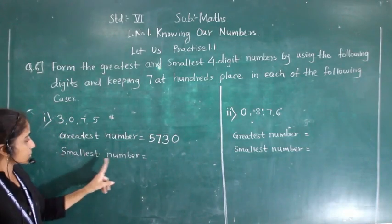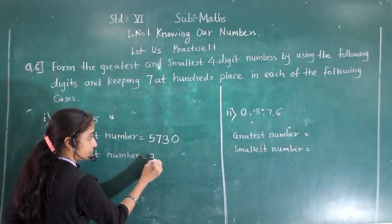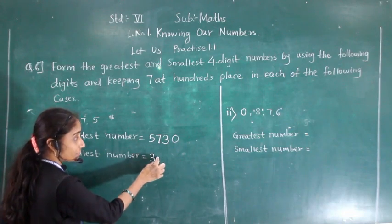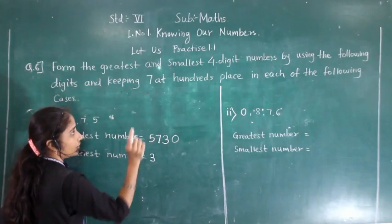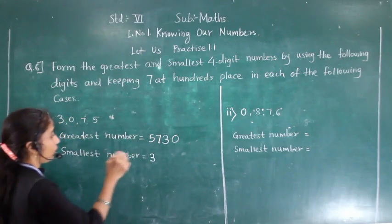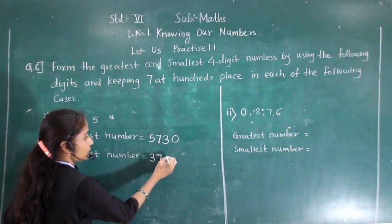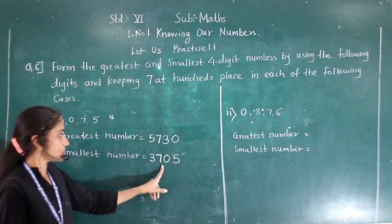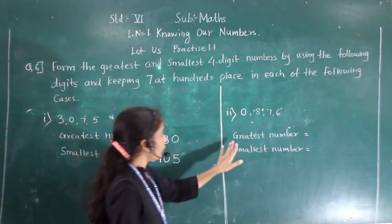Now for the smallest number: we write 3 first, then 7 at the hundreds place — because the given condition is 7 at the hundreds place — then 0 and 5. So 3705 is the smallest number.